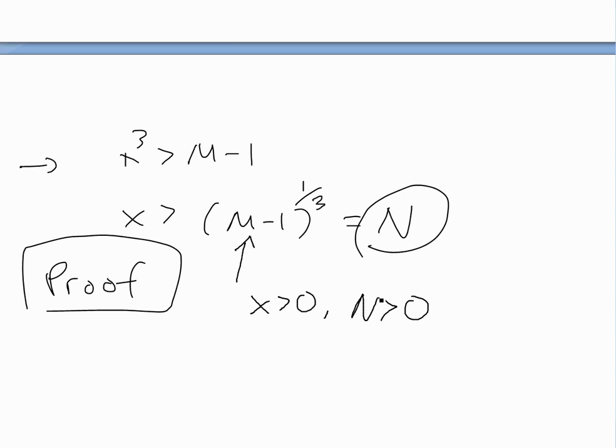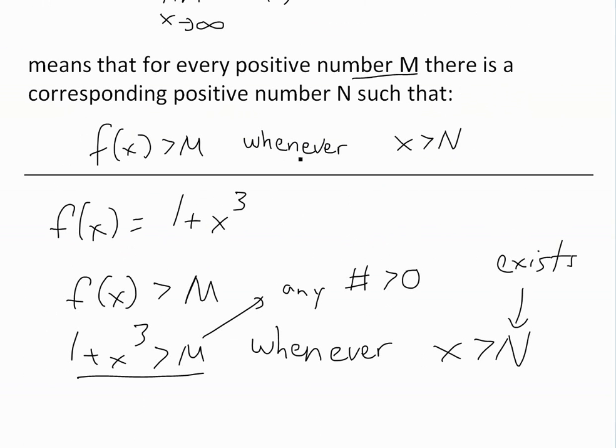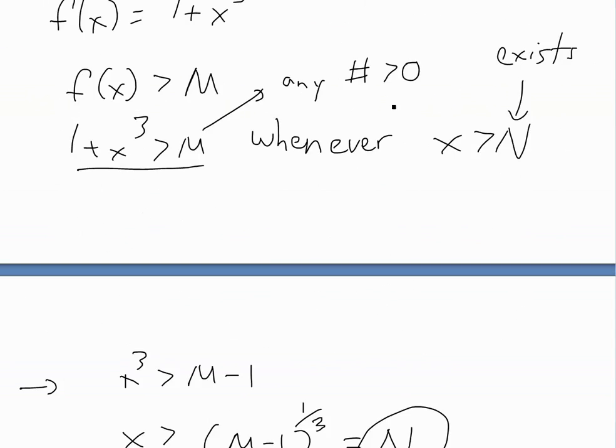I mean M right here. So if M is really, really large, this is going to be a large number. So x is going to be greater than 0, and also N is going to be a positive number greater than 0, as the definition states right there.